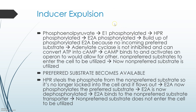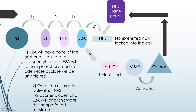For inducer expulsion, you start the same way, but a preferred substrate becomes available while starting with a non-preferred substrate. The phosphate is passed from PEP along to the enzymes. Since no preferred substrate is present initially, E2A stays phosphorylated, adenylate cyclase is not inhibited, ATP is converted into cAMP, and cAMP activates an operon so that non-preferred substrate transporter genes turn on, allowing the non-preferred substrate to enter and be locked into the cell.